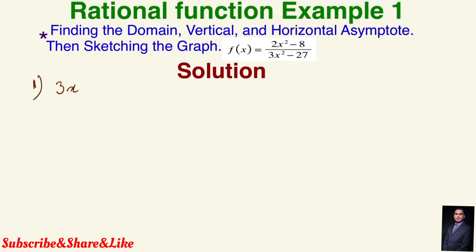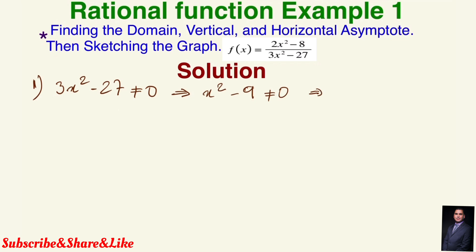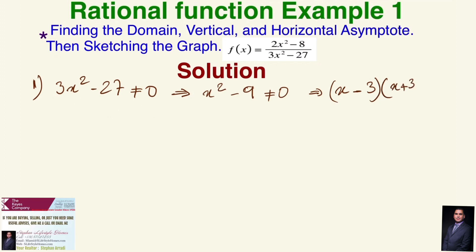We have 3x² − 27 ≠ 0. Let's divide everything by 3 to simplify. That gives us x² − 9 = 0, which factors as (x − 3)(x + 3) ≠ 0. Therefore, x should not equal 3 and x should not equal −3.